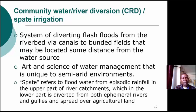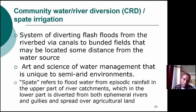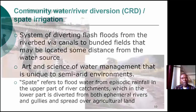Understanding community water diversion or spate irrigation: there are several definitions, but spate irrigation is a system used to divert floods from riverbeds through canals and banded basins. In most cases, the water comes from a distance — not from where the fields are, but from a distant water source — therefore it comes as episodic floods. Spate irrigation can also be referred to as the art and science of water management unique to semi-arid environments, managing floodwater from episodic rainfall which comes from the upper part of the catchment and flows down through the midstream to the lower parts, through ephemeral rivers or gullies, and is then spread into agricultural land.